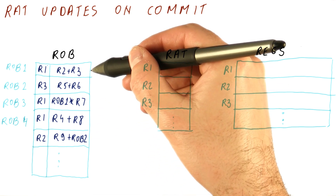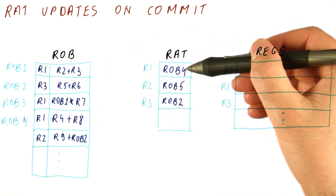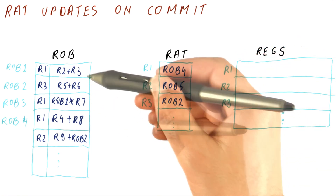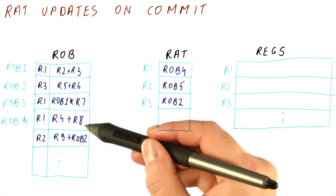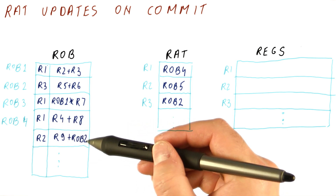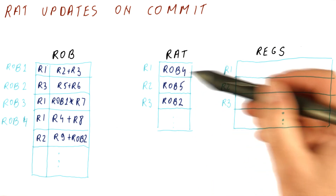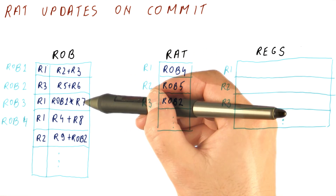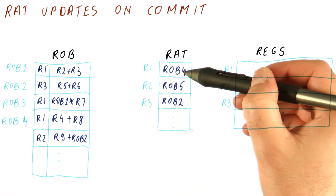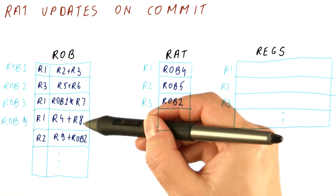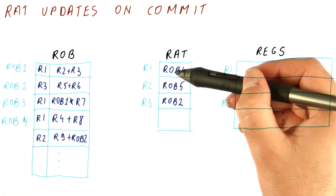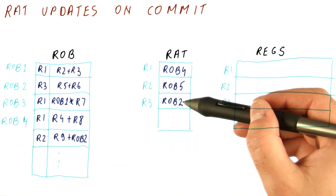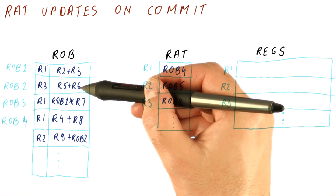This is the next instruction we'll be committing. At that point, the RAT entries are going to be: for R1, we need to point to ROB4. Why? Because the entry in ROB4 is the latest write to R1 as far as the instructions we have issued. This was pointing to the register, then when renamed it pointed to ROB1, then ROB3, and finally ROB4. R2's latest rename was ROB5, and R3's latest rename was ROB2.